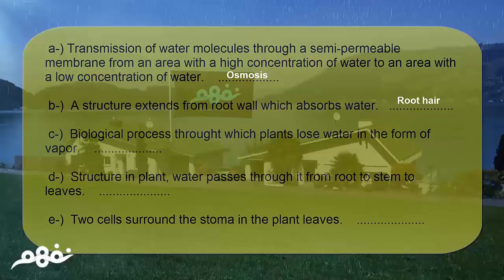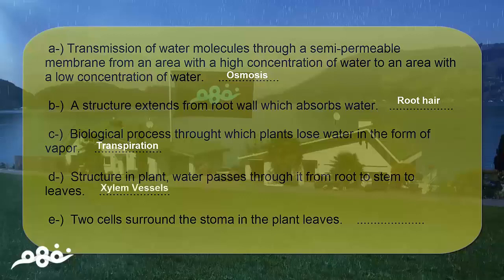(b) A structure that extends from the root wall and absorbs water — it is the root hair. (c) A biological process through which plants lose water in the form of vapor — it is transpiration. (d) The structure in a plant through which water passes from root to stem to leaves — it is the xylem vessels. (e) The two cells surrounding the stoma in plant leaves — they are guard cells.